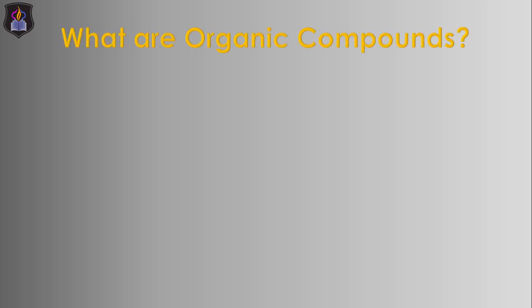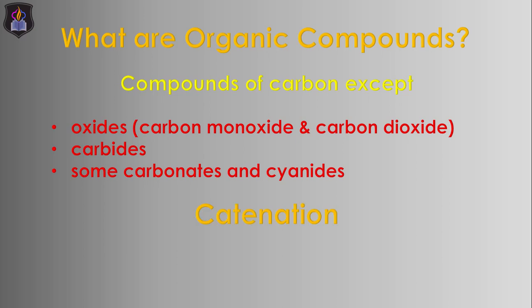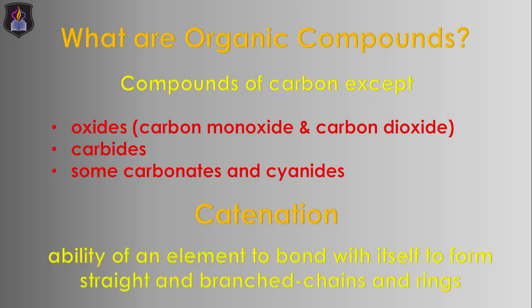Welcome back. Before we continue, let's answer some basic questions — like what are organic compounds? Organic compounds are compounds of carbon other than its oxides, carbides, some carbonates, and cyanides, formed based on the catenating property of carbon. Catenation is the ability of an element to bond with itself to form straight and branched chains and rings.